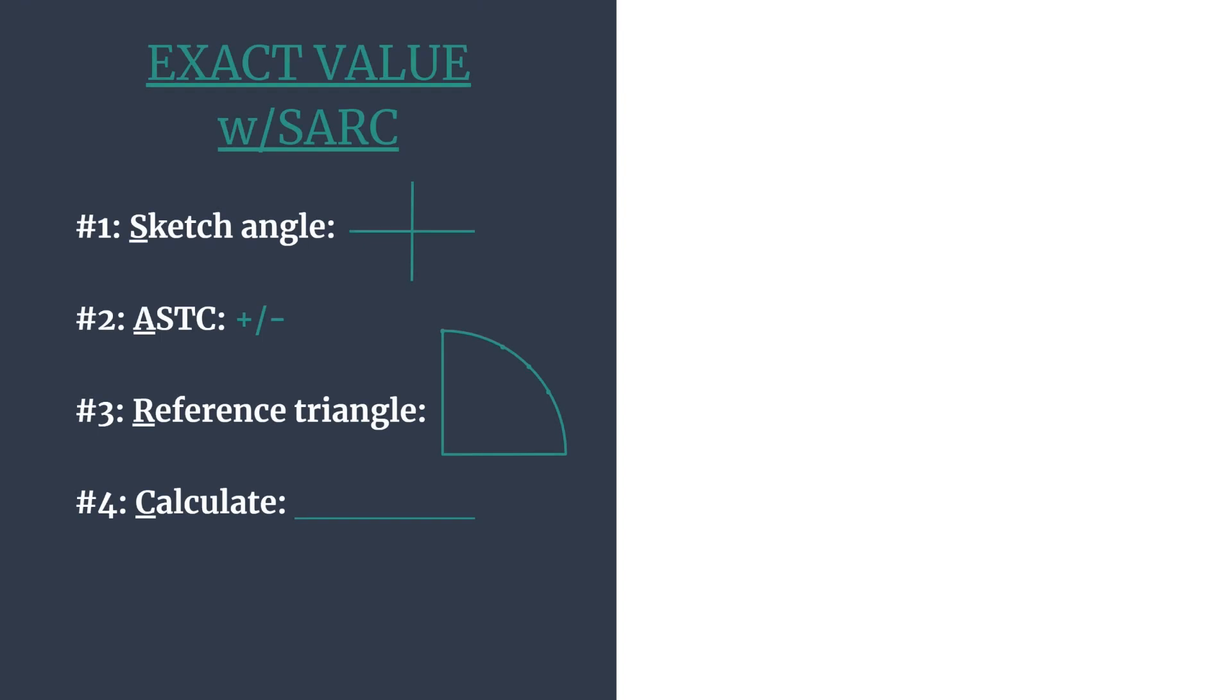So here's our template: S being sketch the angle, A for ASTC which helps us decide if our exact value sine should be positive or negative, R for reference triangle and finding the coordinates we'll use, and C for calculate to perform the calculation for the trig ratio we want.